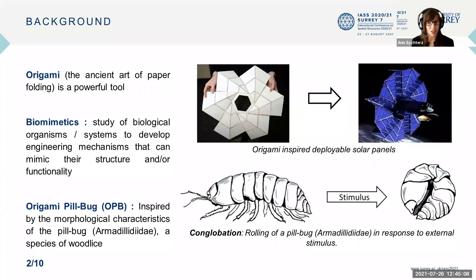First of all, this is dealing with origami, which is the ancient art of paper folding. And in the domain of structural engineering, it's a very powerful tool that we can utilize. As seen here, you can have an origami-inspired solar panel used for outer space applications.